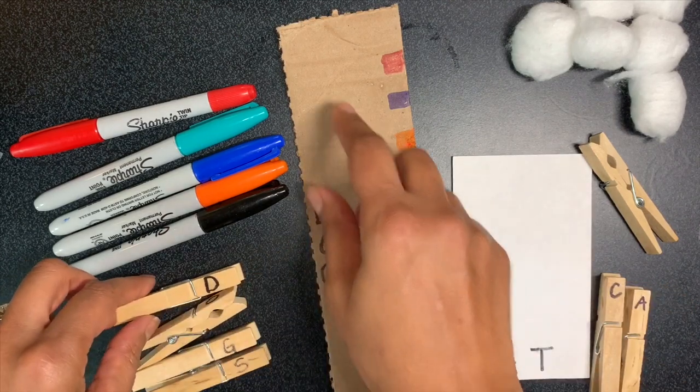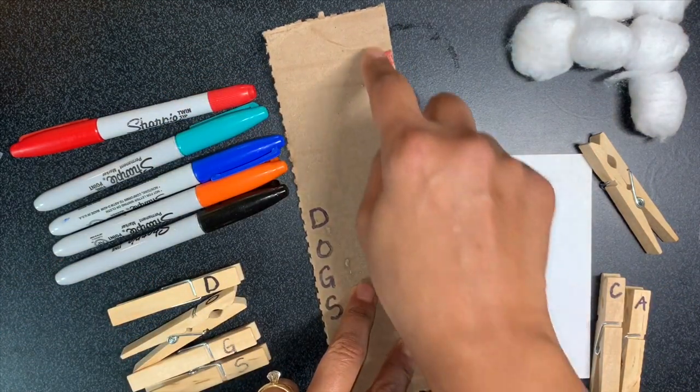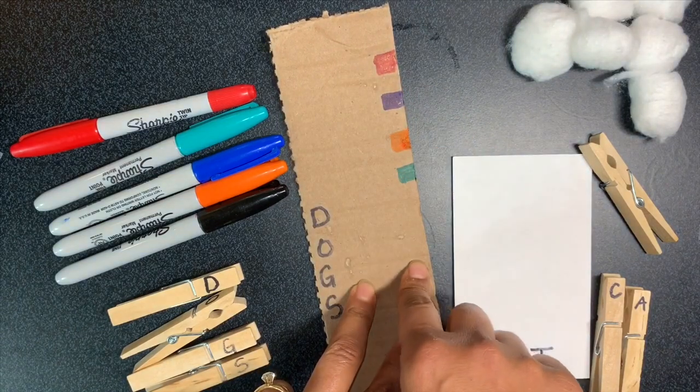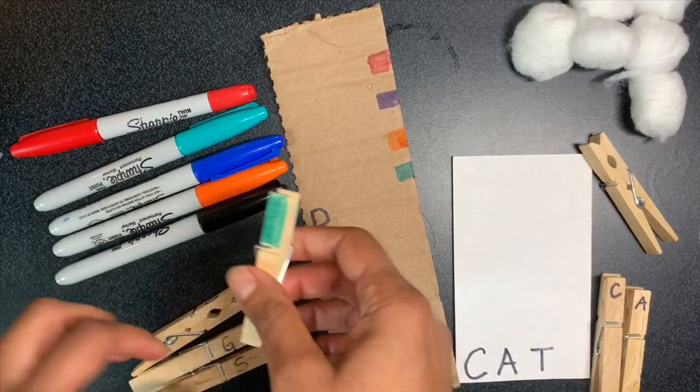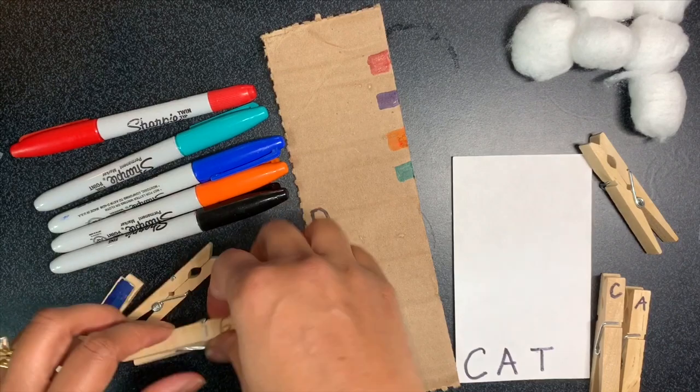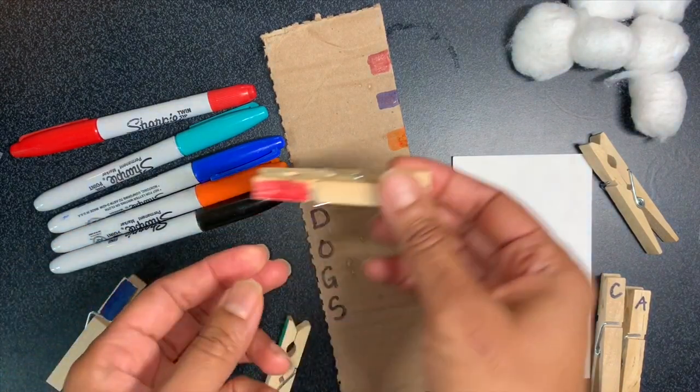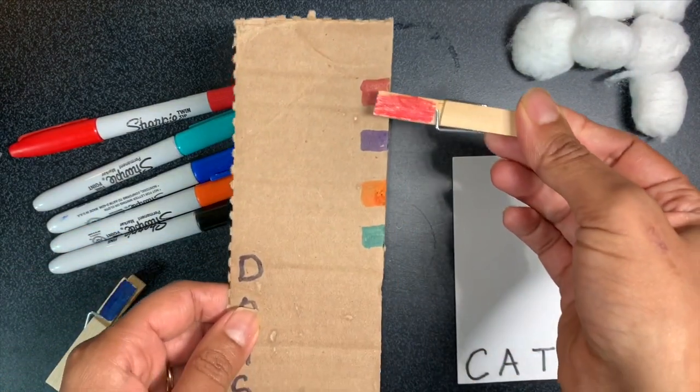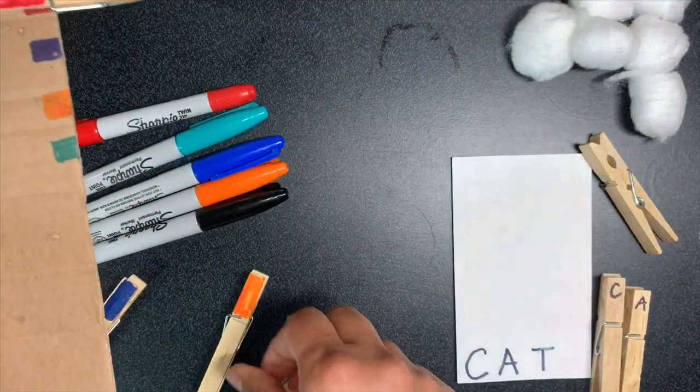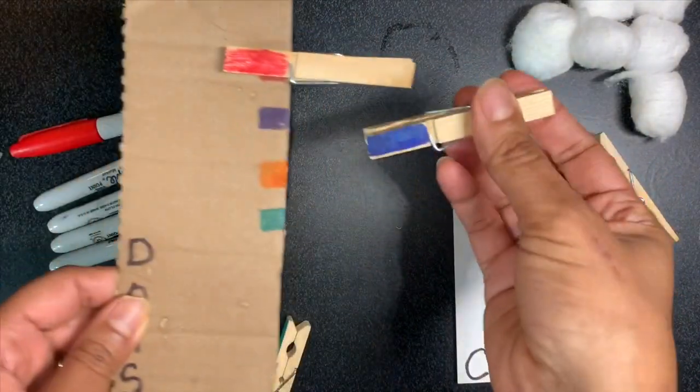So I took the markers and I added different colors on my cardboard and I colored the clothespins on one side so that we could encourage, depending on what type of pinch strength you were trying to work on, to match colors.